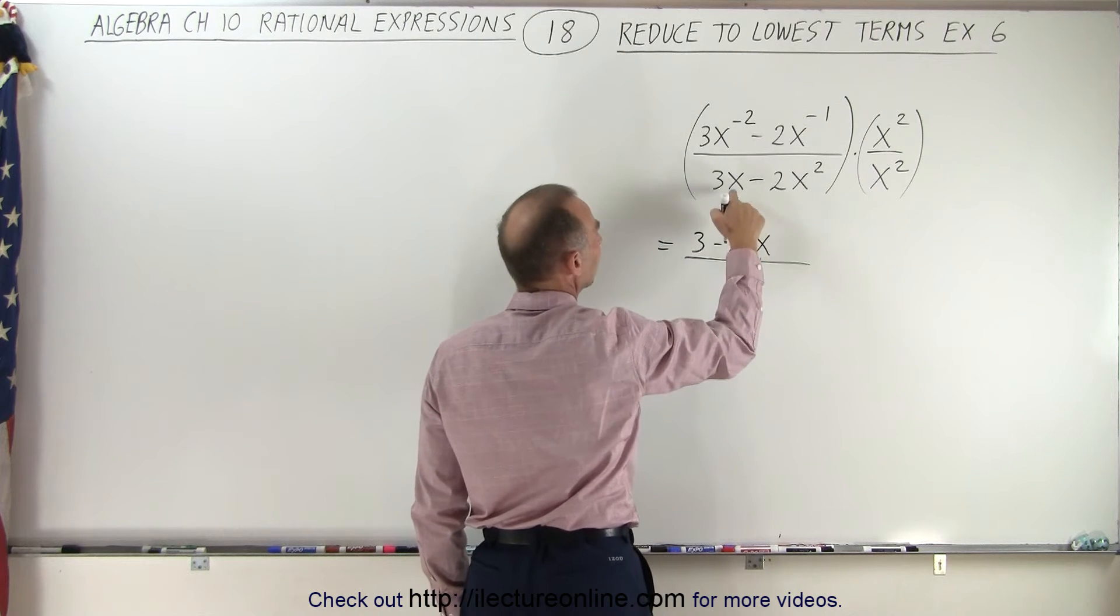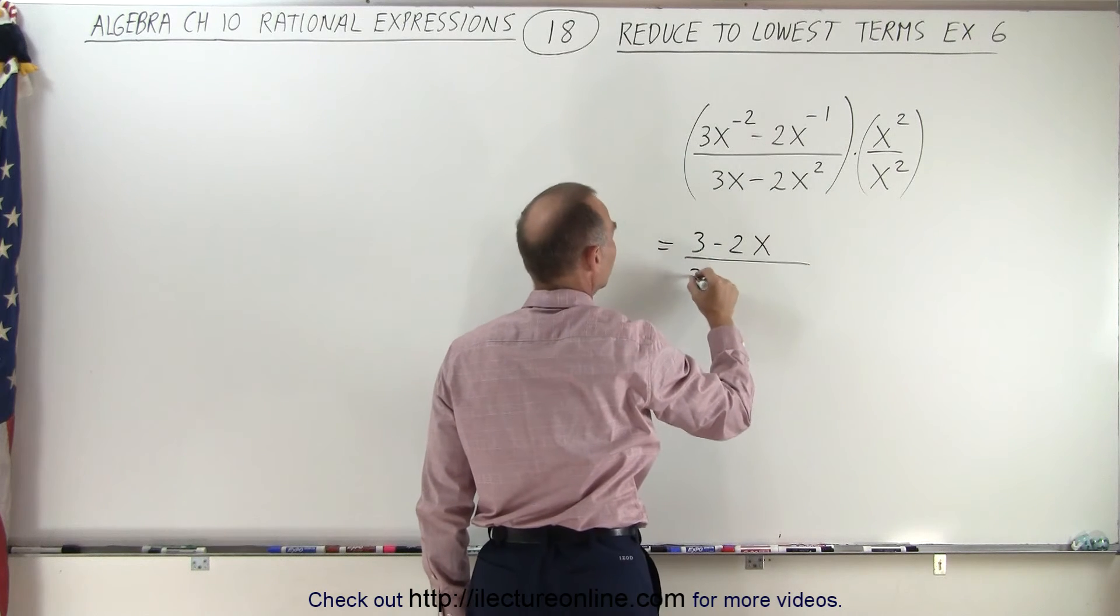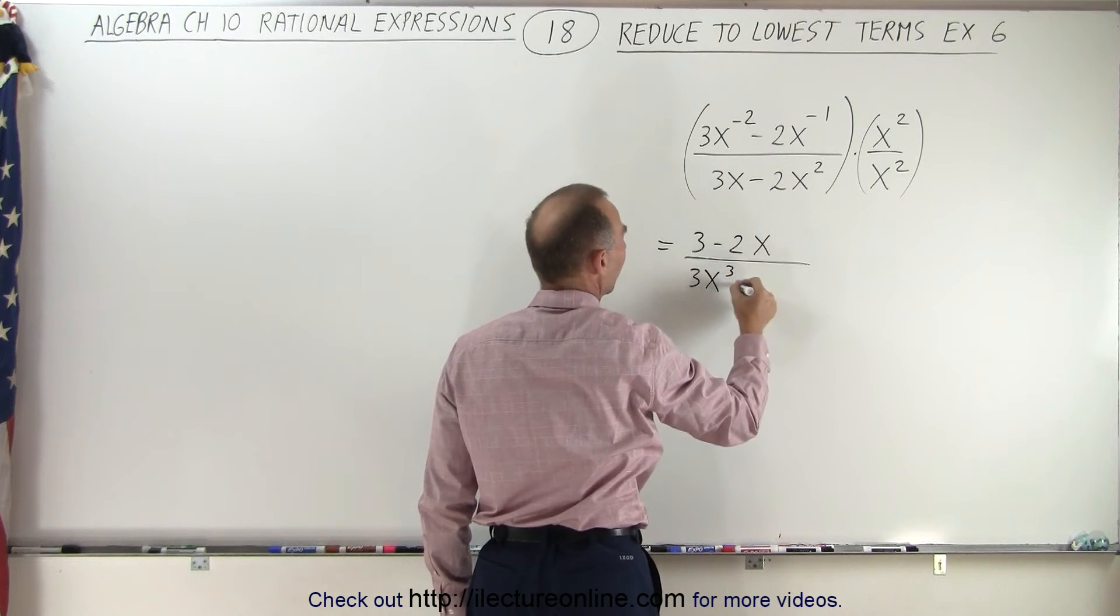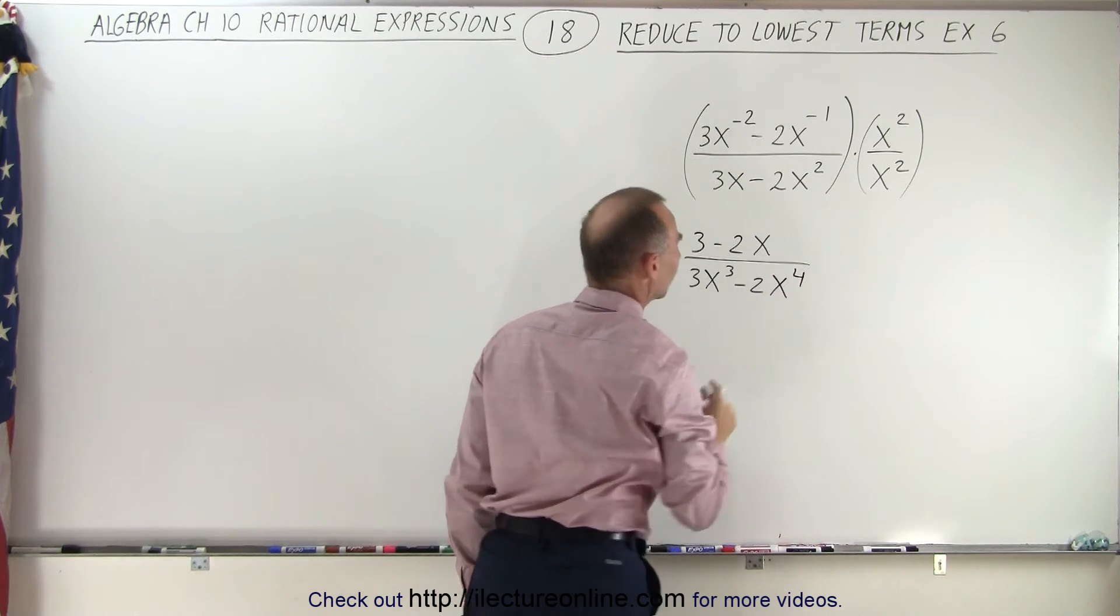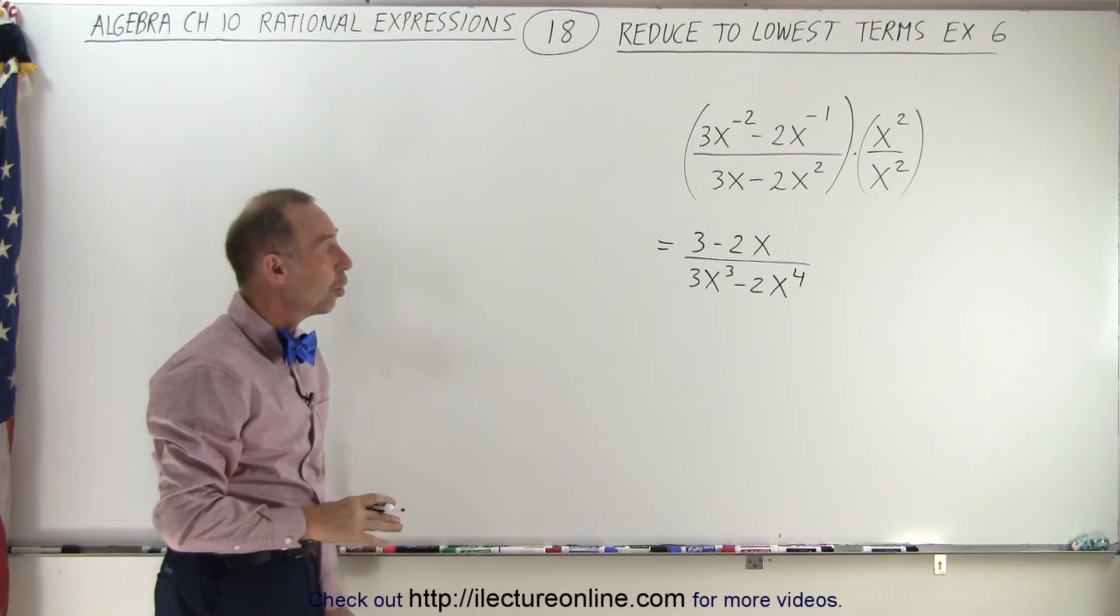Divided by, in the denominator, we get x times x squared is x cubed, minus 2x squared times x squared is x to the fourth. So we've been able to eliminate all the negative exponents.